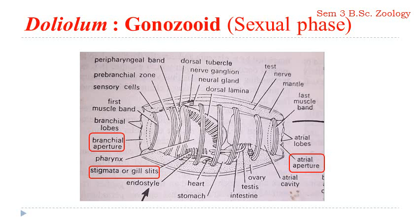The body is barrel-shaped and it possesses two apertures — the branchial aperture and the atrial aperture — positioned on opposite ends, marking the anterior and the posterior end. Starting from the anterior end to the posterior end, the whole body is provided with eight muscle bands that completely encircle the body, which is why the order is also referred to as Cyclomyaria. You can see all these bands very clearly through the transparent test.